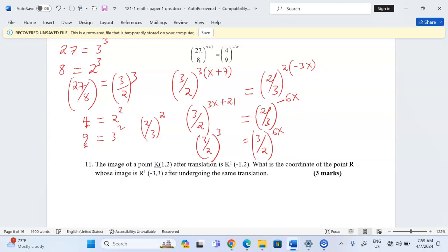So we can take the reciprocal and the power reverses its sign. Then now we have 3 out of 2 on this side, this one remaining the way it is 21.